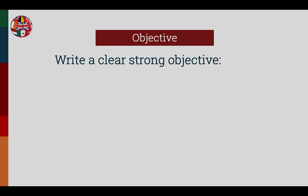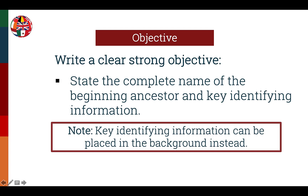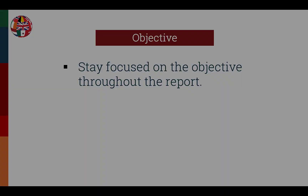The first element of the research report is the research objective. Write a clear, strong objective at the beginning of the report. State the complete name of the beginning ancestor and key identifying information such as birth date, birthplace, and relationships. It's not necessary to convey all the known information for the starting person — just include enough to uniquely identify the main subject in a specific place, time, and in specific relationships. Note that the key identifying information can be placed in the background instead of in the objective.